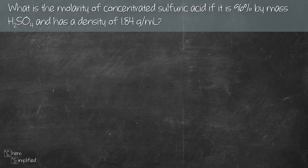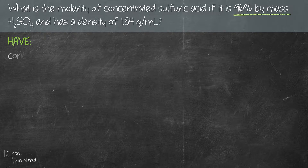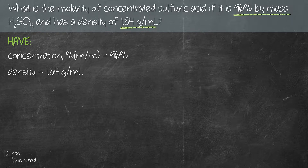In this question, we're asked to find the molarity of a concentrated sulfuric acid that has a percent by mass of 96% and a density of 1.84 grams per ml. Let's list down what the question gives us: 96% is the percent by mass, 1.84 grams per ml is the density, and the question wants us to find the molarity.